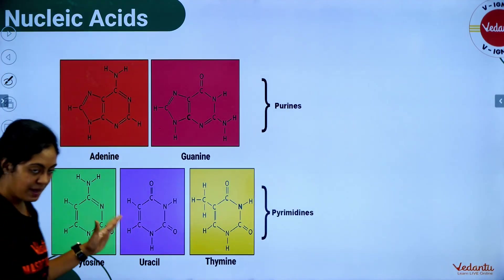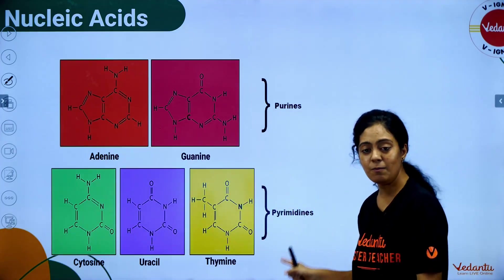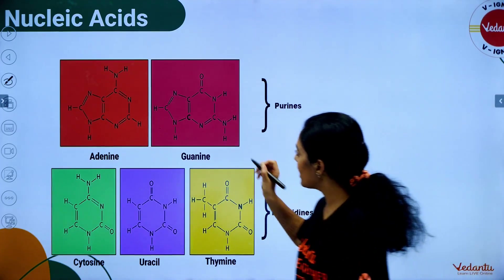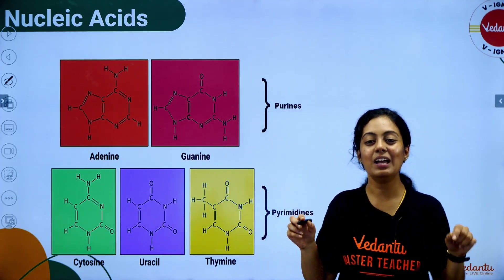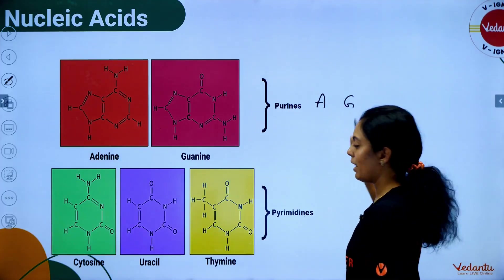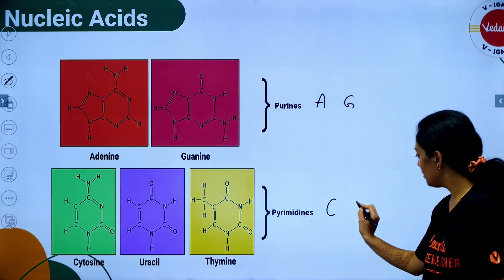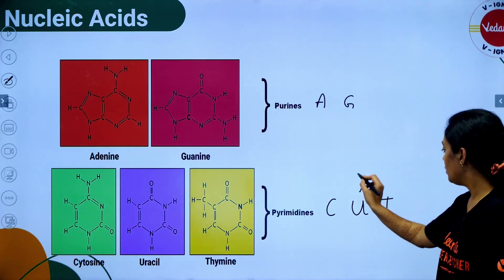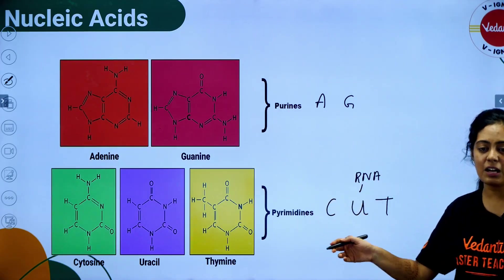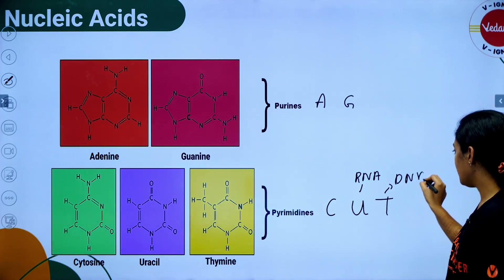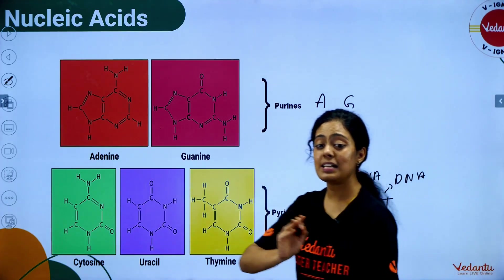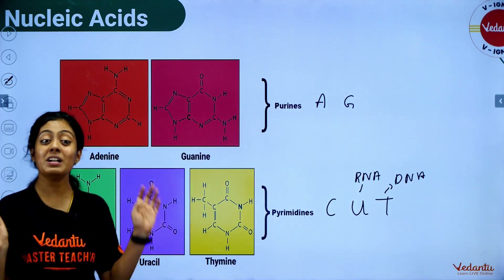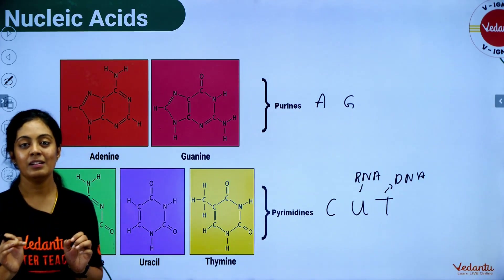Nitrogenous bases: there are 5 nitrogenous bases divided into purines and pyrimidines. Purines are adenine and guanine. Pyrimidines are cytosine, uracil, and thymine. Cytosine is found in both DNA and RNA; uracil is found only in RNA; thymine is found only in DNA. So the base present only in DNA and not in RNA is thymine; the base present only in RNA and not in DNA is uracil.